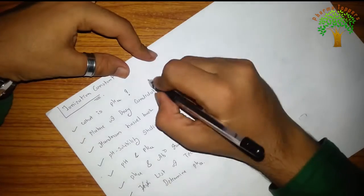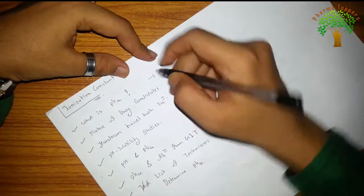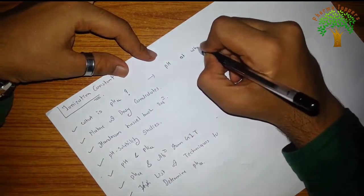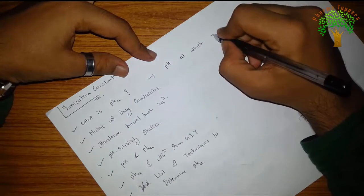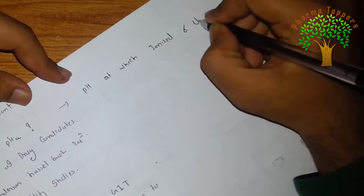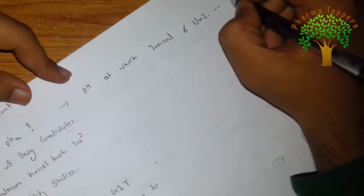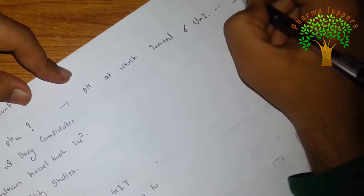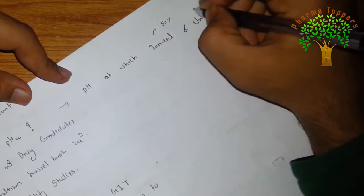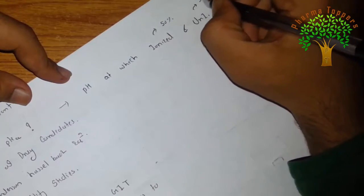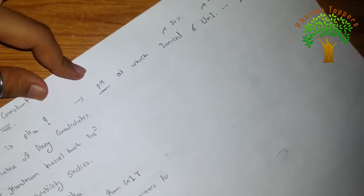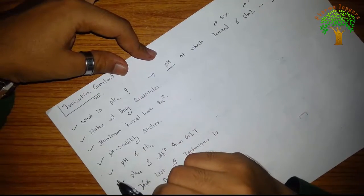First of all, what is pKa? It is the pH point at which the drug's ionized and unionized forms are in equilibrium — meaning 50% ionized and 50% unionized. That pH is termed as the pKa of the molecule.